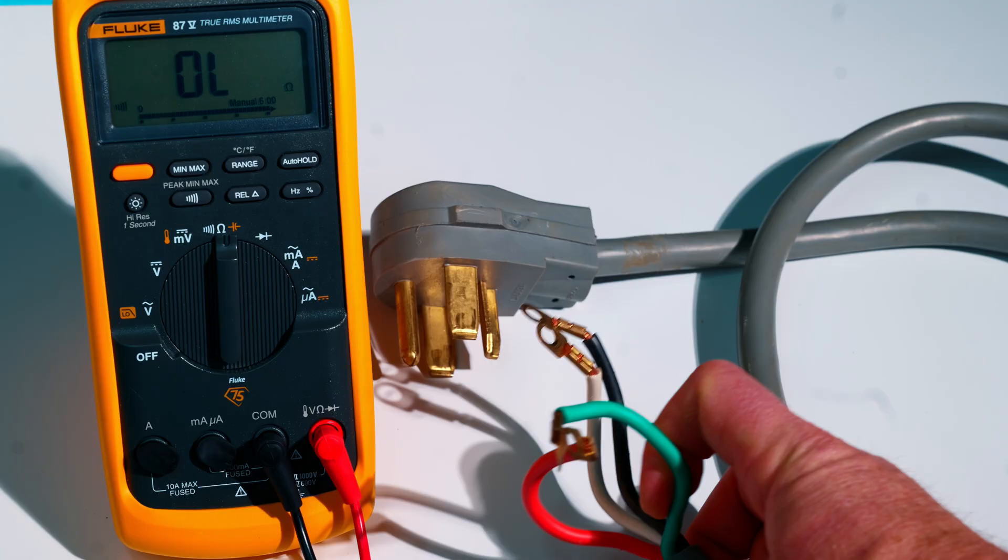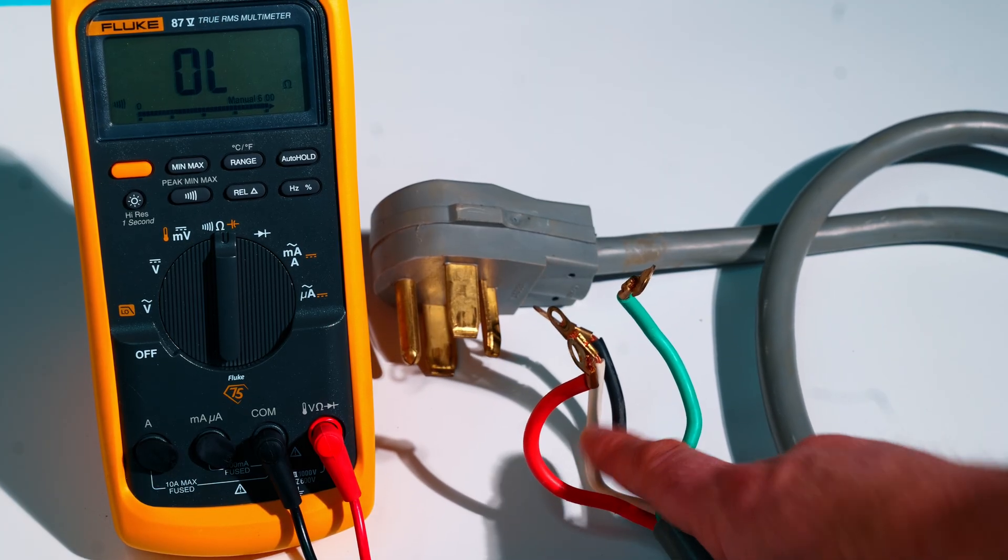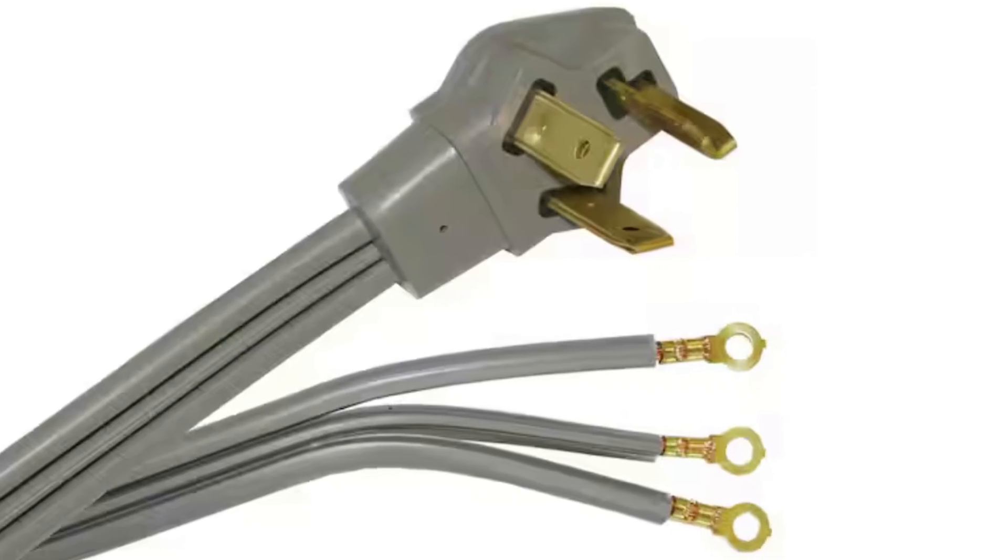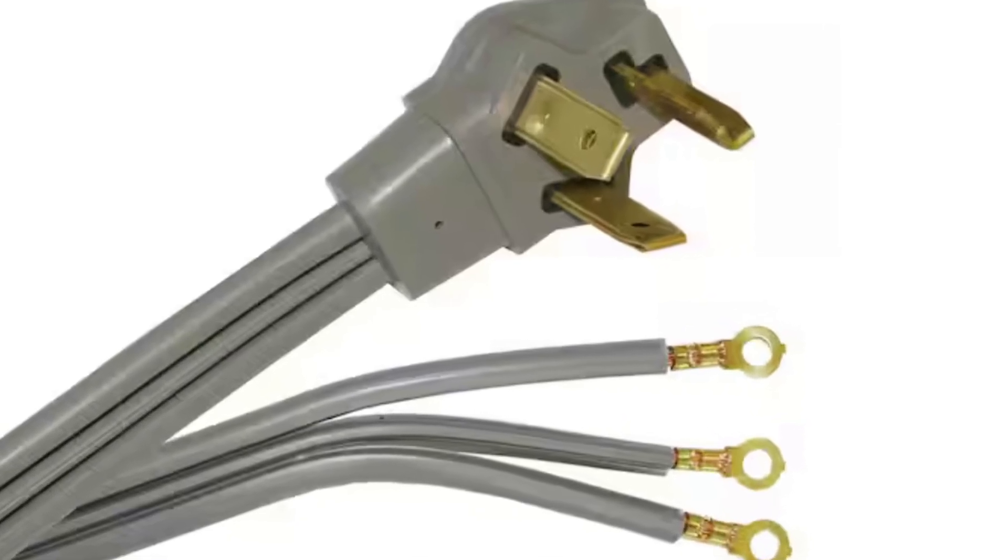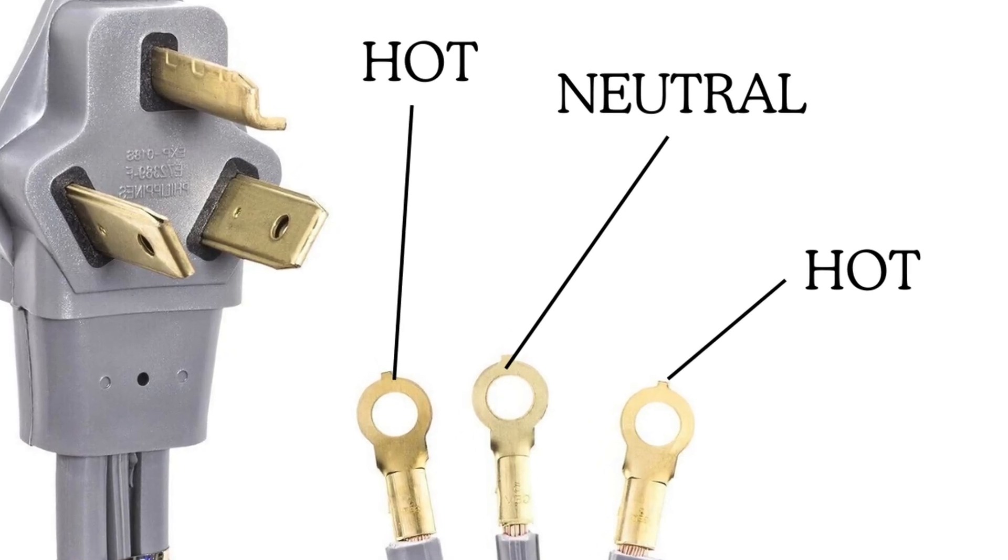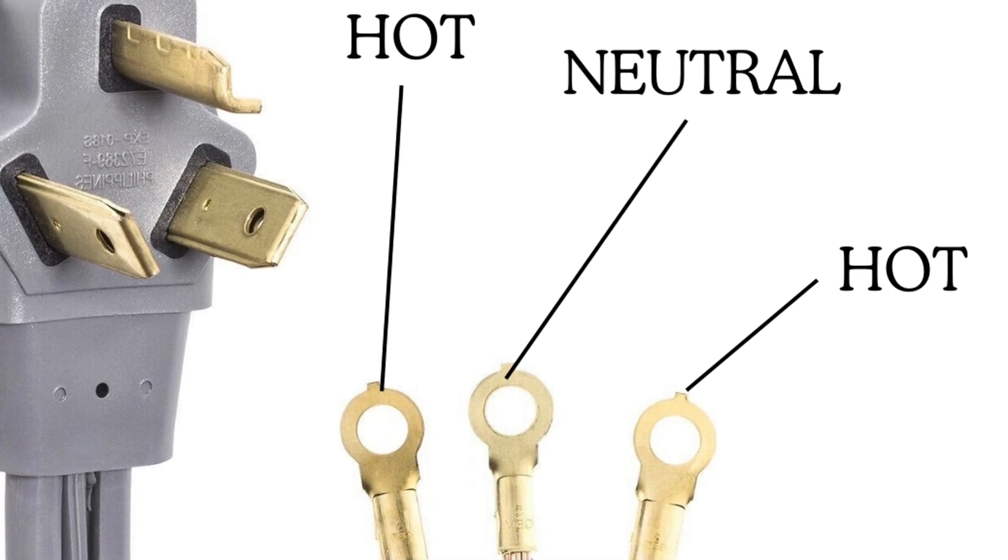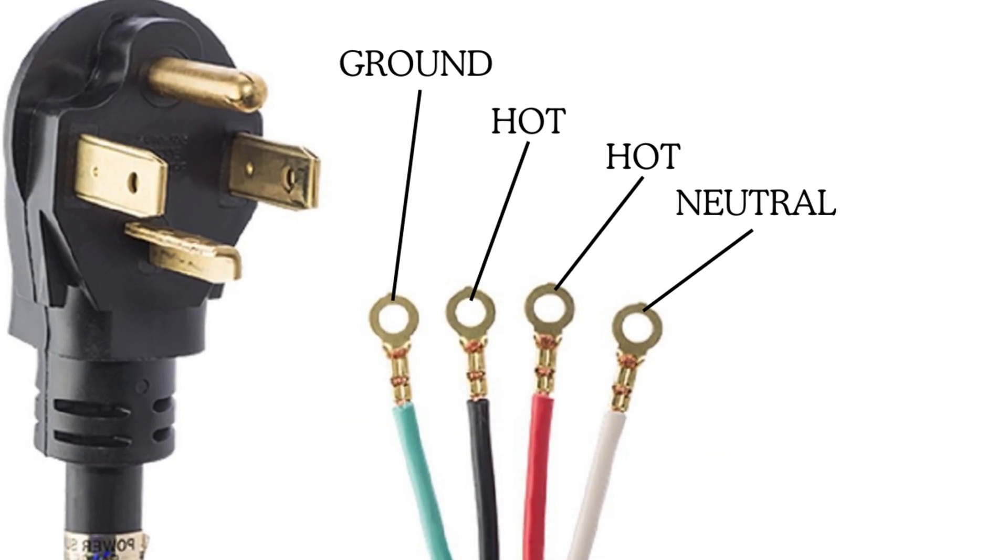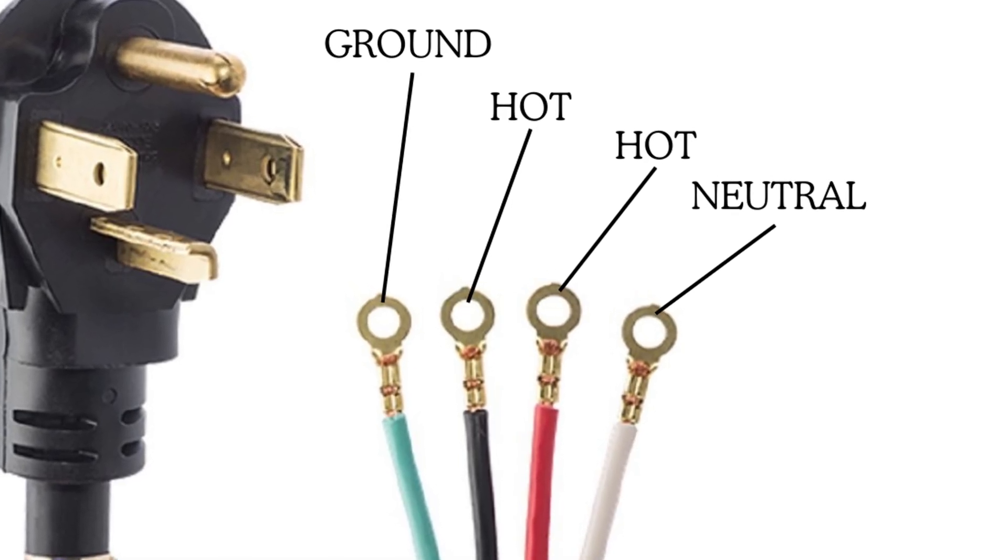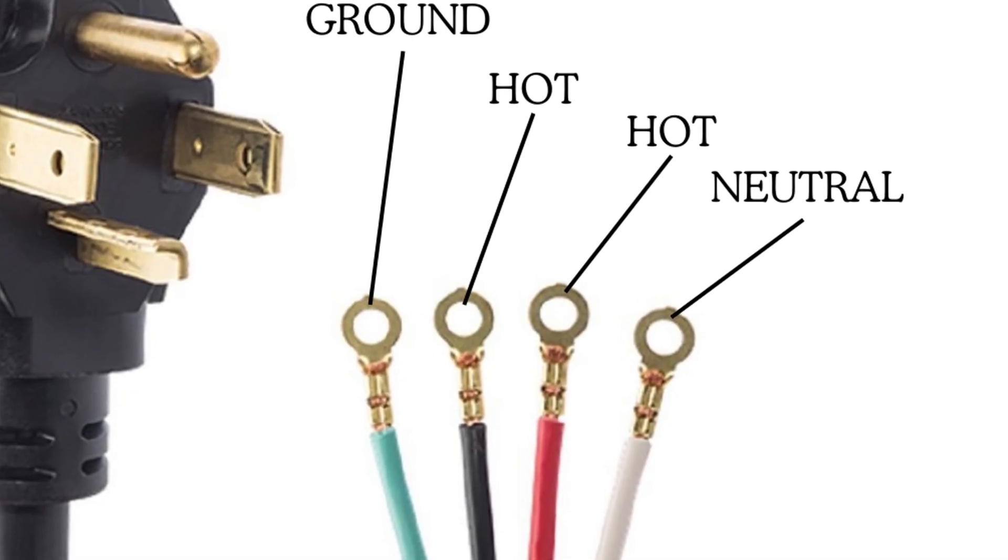On a dryer cord here in the US, typically you're gonna have four wires. You're gonna have a red, black, white, and green. Now there is a chance that you may have an older three-prong dryer cord and it's only gonna have three wires because the neutral and ground, which are the white and green on this one, are tied together in the cord somewhere. How the dryer cords work here in the US, you're gonna have one leg of power on your black and one leg of power on your red wire.